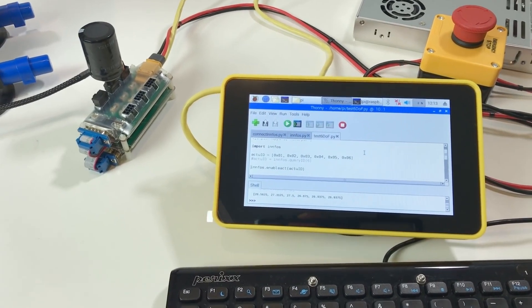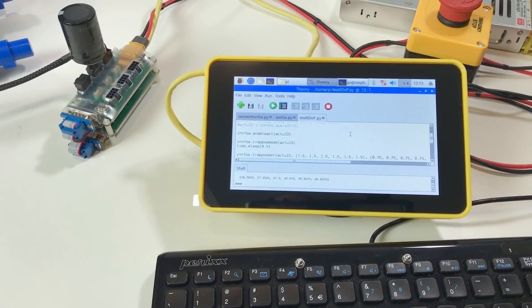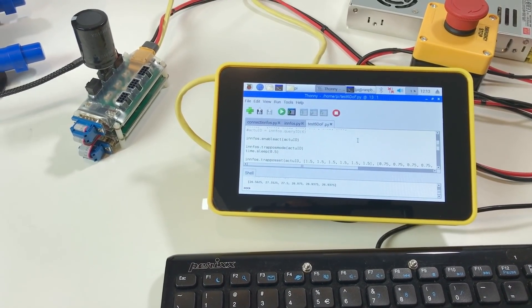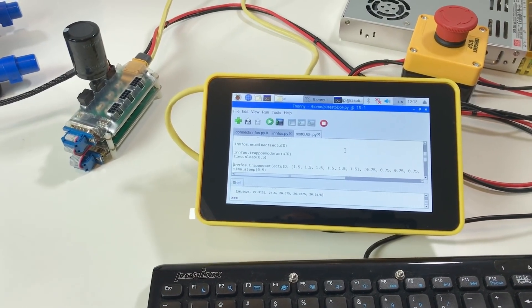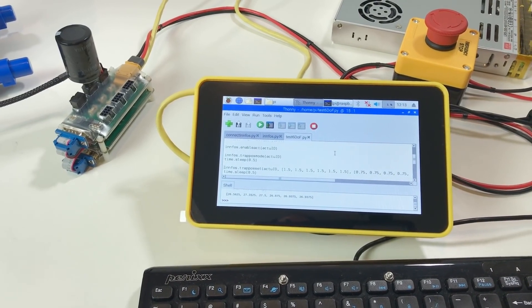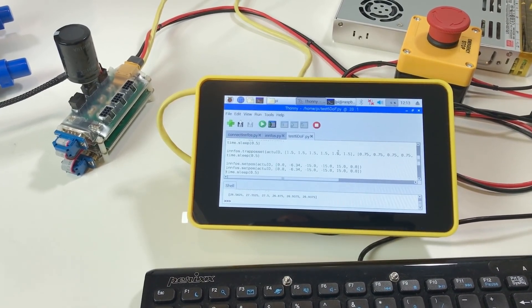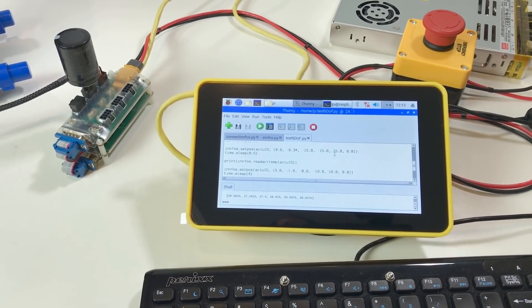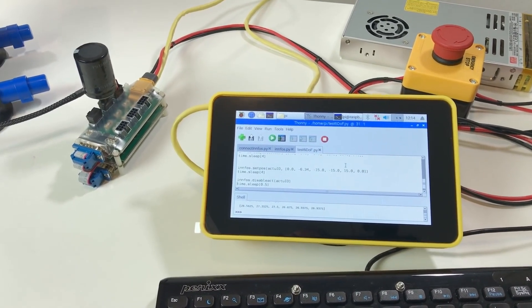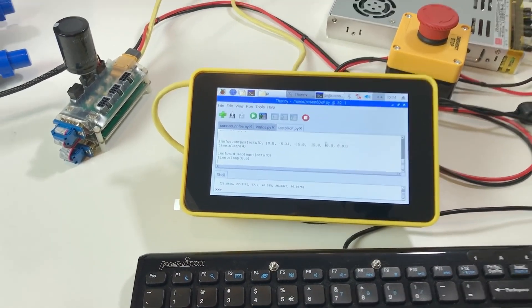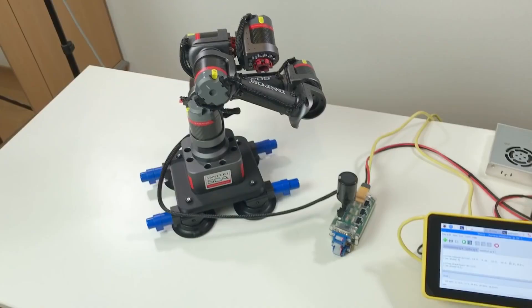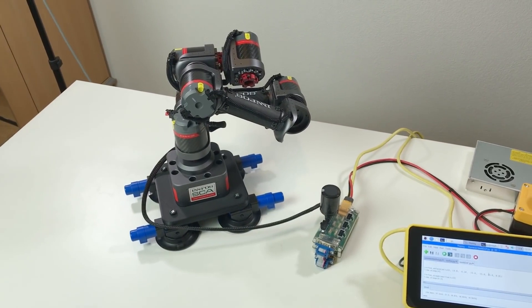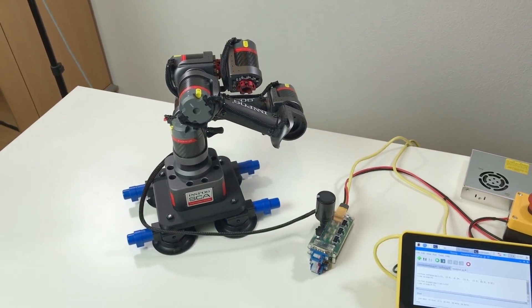So in the beginning I enable actuators. Afterwards I go to the trapezoidal position mode. I can set the acceleration and maximum speed for each actuator. And afterwards I can move the actuator to different positions. And at the end I disable all the actuators. So let's try to test it and see how my program works and how the robot moves. I think this is the most interesting, how the robot moves.